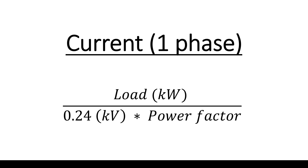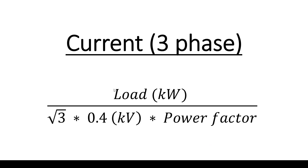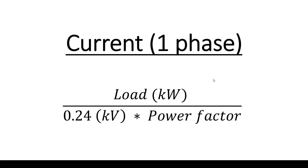For single-phase loads, the formula is the same but with two key differences: the voltage rating is 0.24 kV (line-to-neutral), and there is no √3 term. The power factor remains 0.8. These two formulas — three-phase and single-phase — are used in all cases to calculate the current capacity of the feeder for any electrical load.